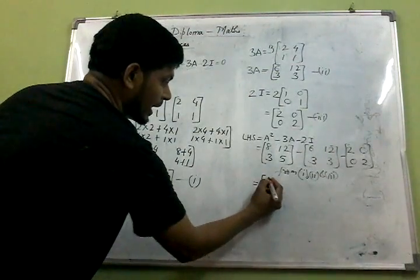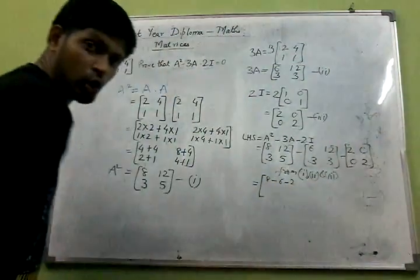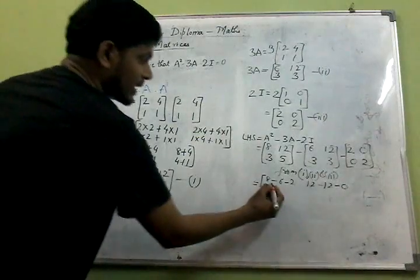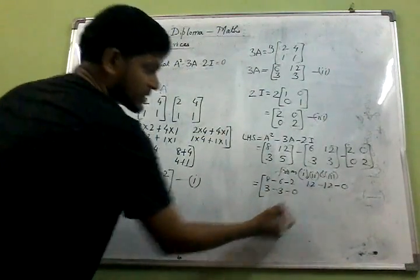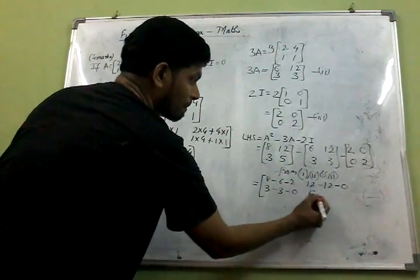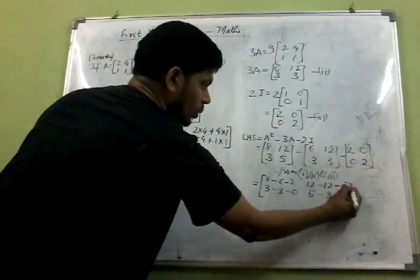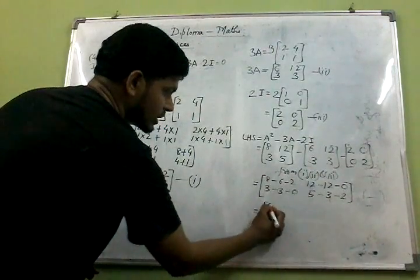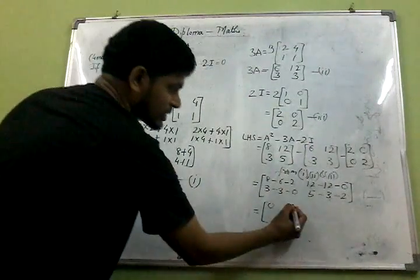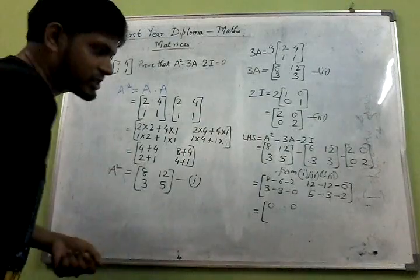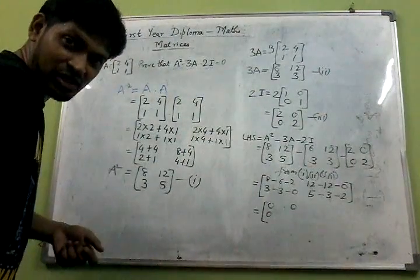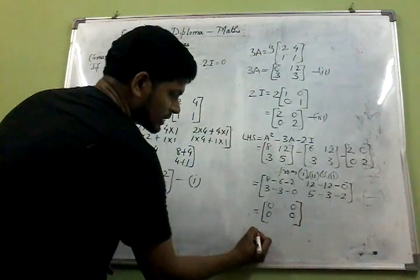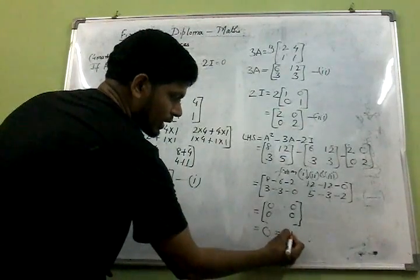Now we perform the operations element-wise: 8 minus 6 minus 2 equals 0; 12 minus 12 minus 0 equals 0; 3 minus 3 minus 0 equals 0; and 5 minus 3 minus 2 equals 0. So we get the zero matrix, which is equal to the right hand side. Hence proved.